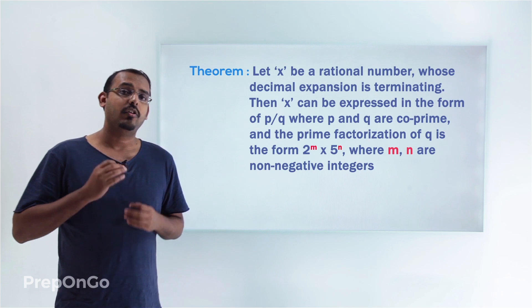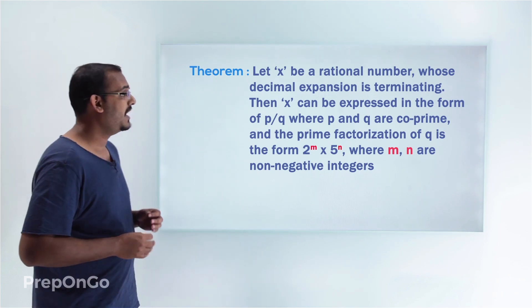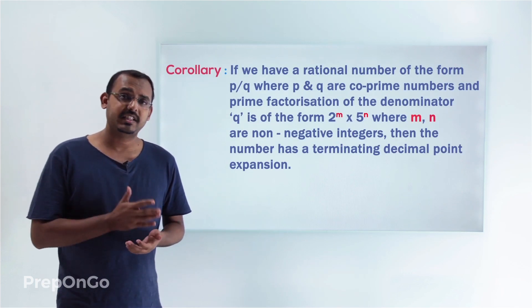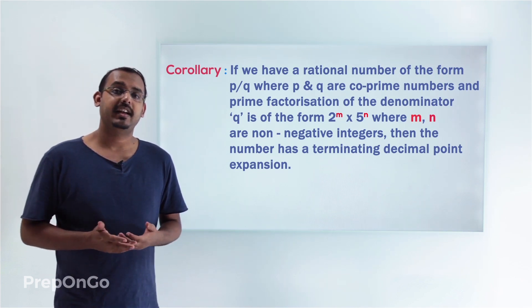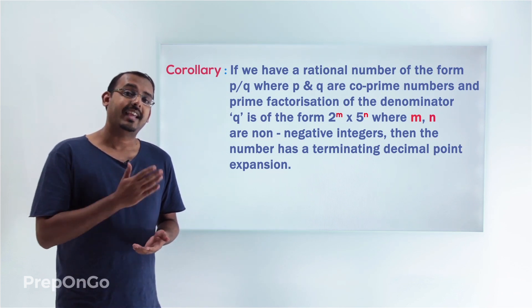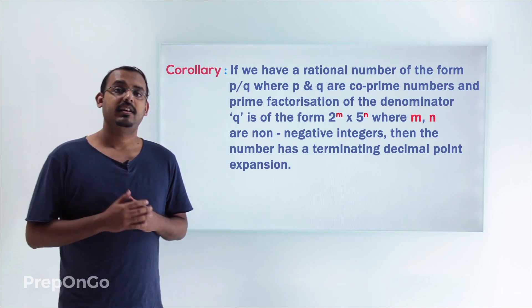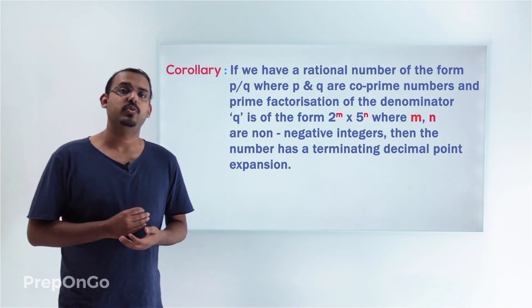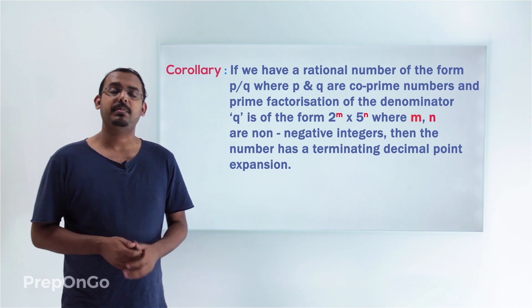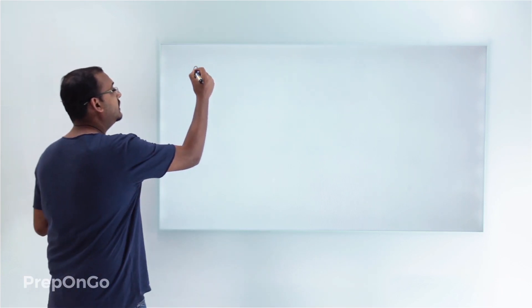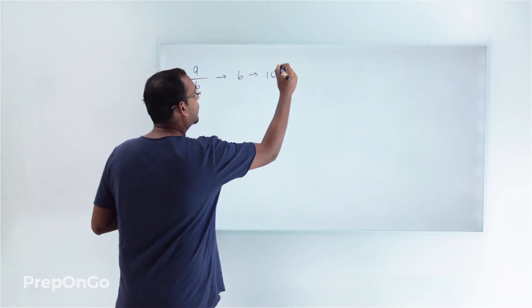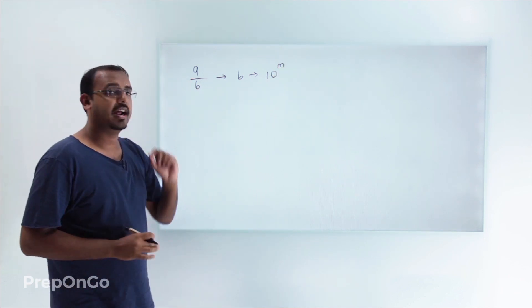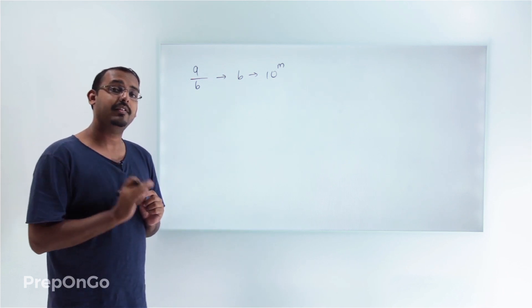Now you might be wondering if the corollary of this theorem is true. In other words, if we have a rational number p by q where p and q are co-prime and q is of the form 2^m × 5^n with m and n non-negative integers, can we say that x has a terminating decimal expansion? The corollary is true and there is a very easy way to prove it. We know that if a rational number can be represented as a by b where b is any power of 10, it is going to have a terminating decimal expansion.